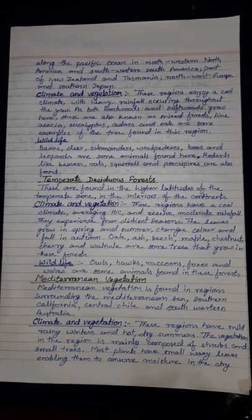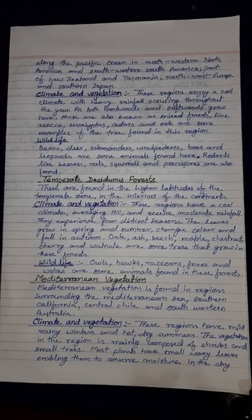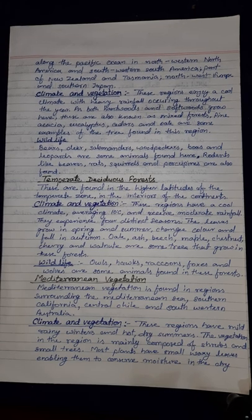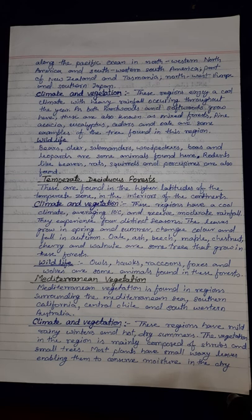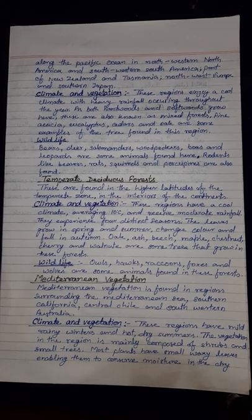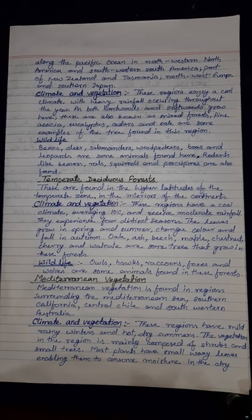Temperate deciduous forests experience four distinct seasons. The leaves grow in spring and summer, change color and fall in autumn. Oak, ash, beech, maple, chestnut, and walnut are some trees that grow in this forest.